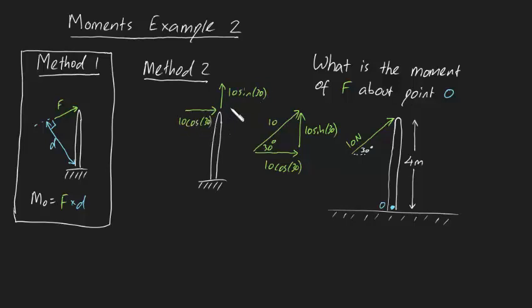And you might be thinking, well, why would you even do this? You seem to have made the problem a whole lot harder. Now instead of having one force, we've got two. But in fact it's made it so much easier, because we can figure out that the moment about O is just the combined moment due to both of these forces.